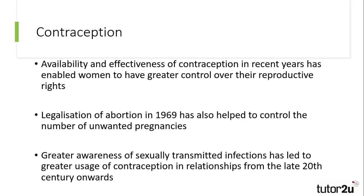Another reason for the declining birth rate is the availability and effectiveness of contraception. This has enabled women to have greater control over their reproductive rights, and for families to effectively plan when they are going to have children. Other factors impacting on birth rates include the legalisation of abortion in 1969, which has led to reductions in unwanted pregnancies. A final impact of contraception on the birth rate has been greater awareness of sexually transmitted infections, which has led to increased usage of contraception and a focus on shared responsibility between partners, rather than just women, to guard against unwanted pregnancies and sexually transmitted infections.